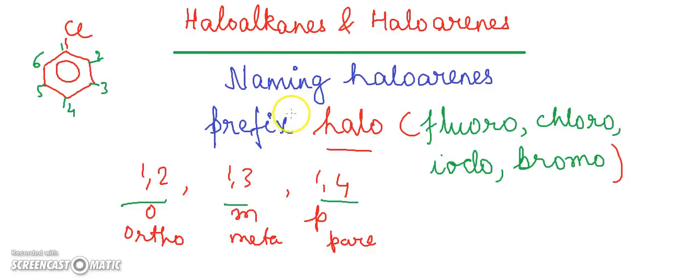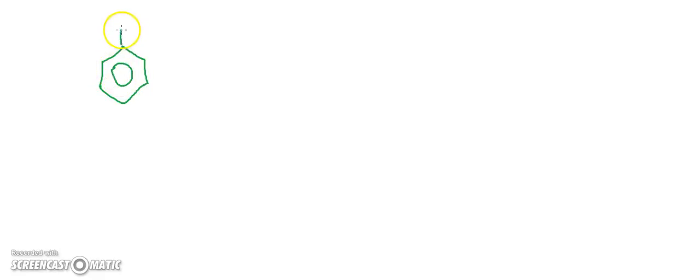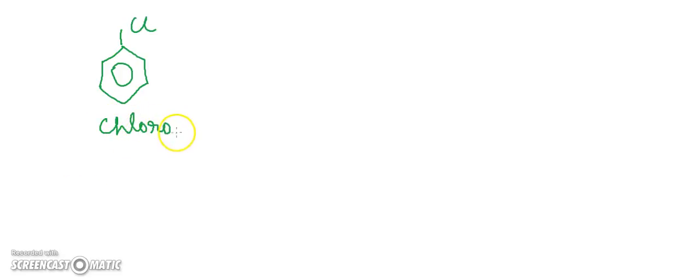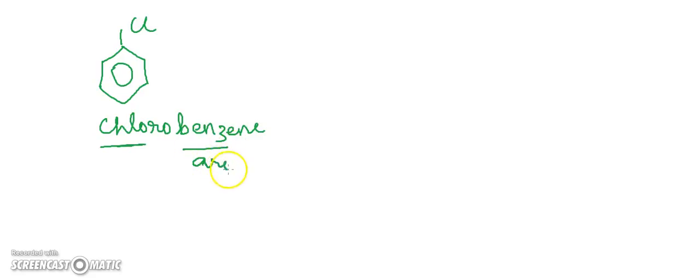We will understand more about the nomenclature of haloarenes from examples. For example, the simplest structure is a benzene ring with a chlorine atom. The name of this compound is chlorobenzene — here 'chloro' is your prefix and 'benzene' is your aromatic hydrocarbon.